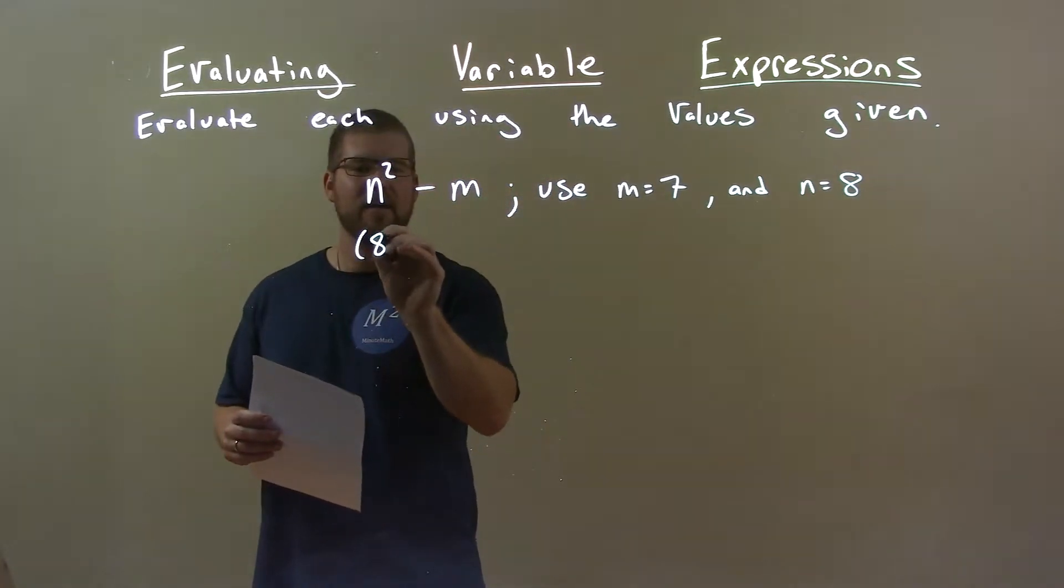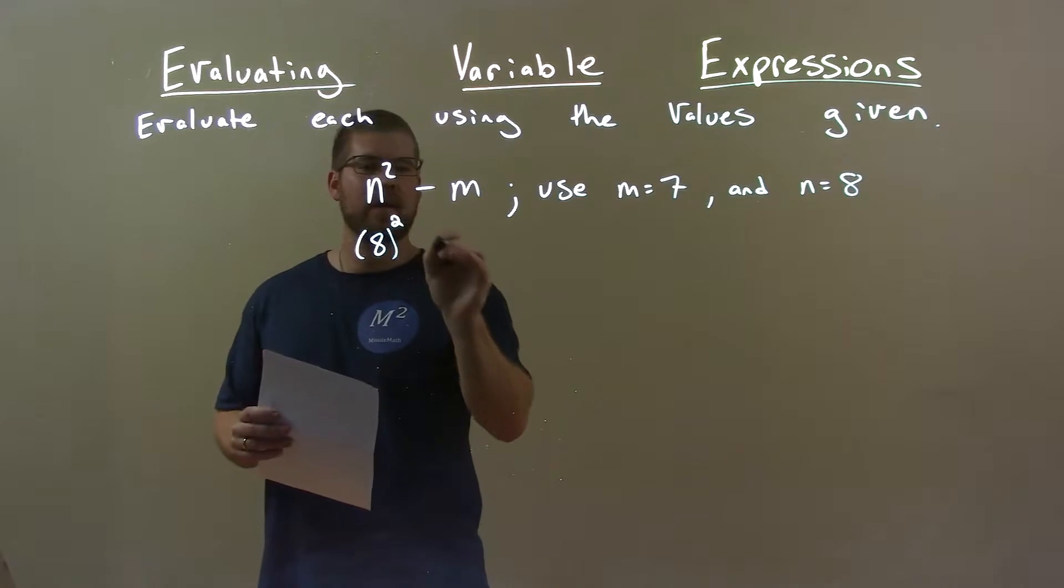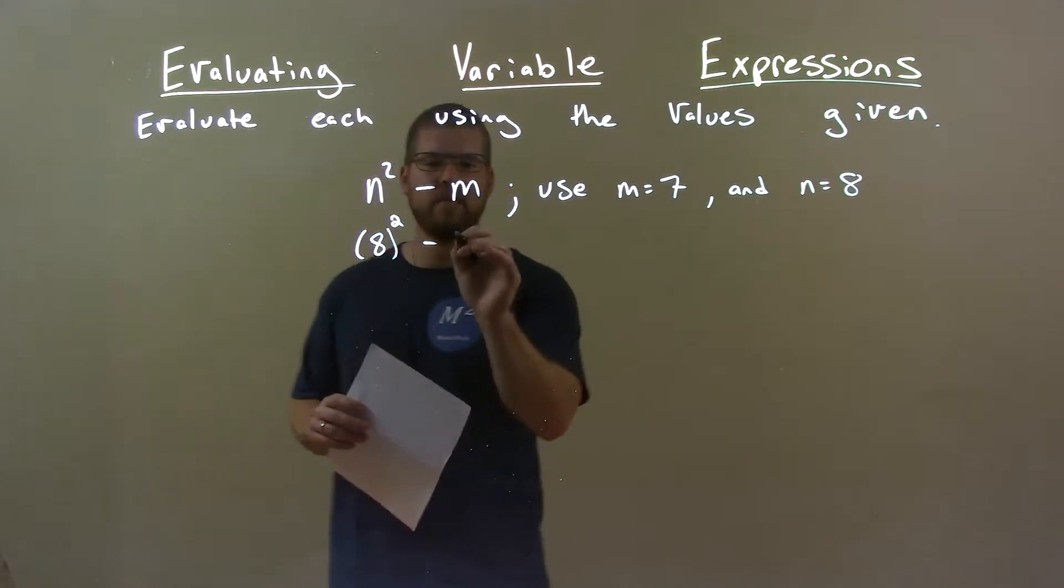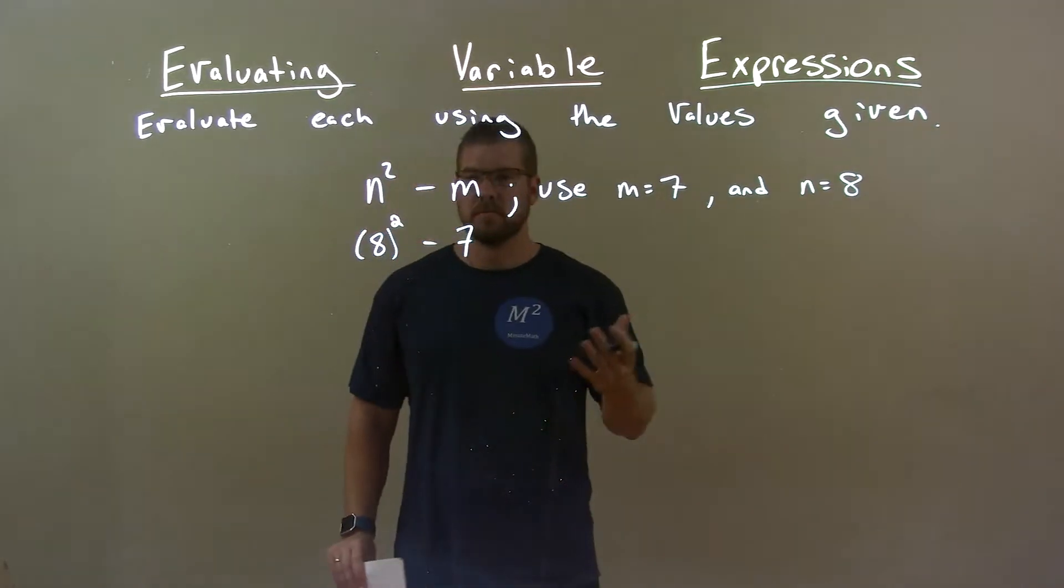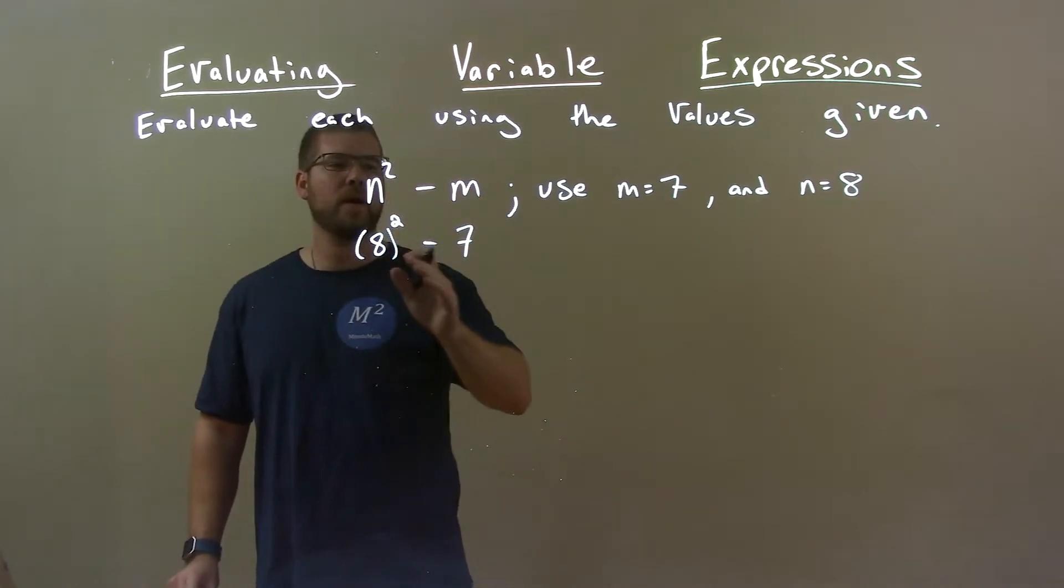So n squared, n being 8 squared, minus m is 7. Now at this point, we just got to simplify. 8 squared minus 7.